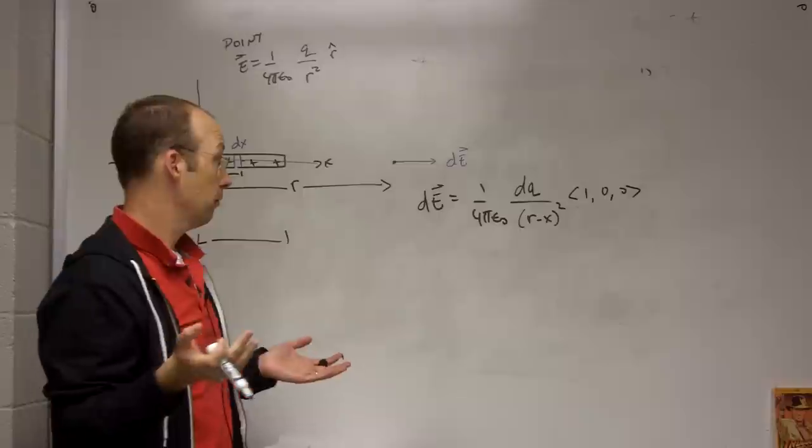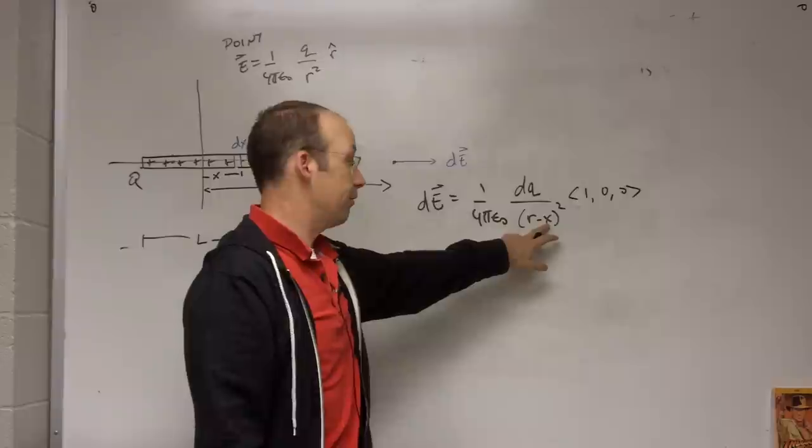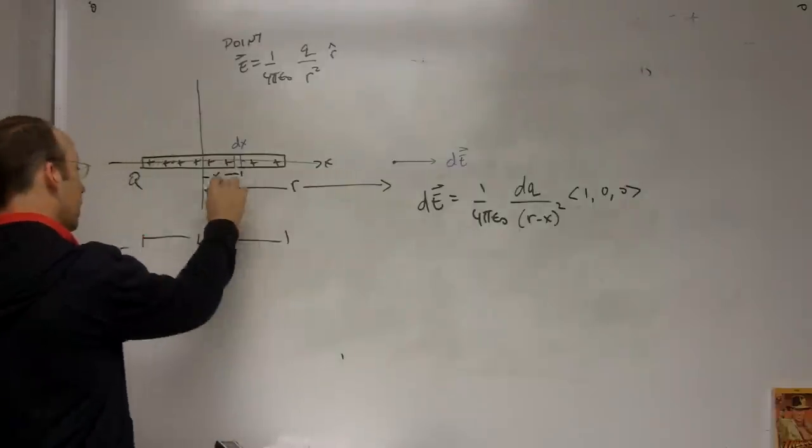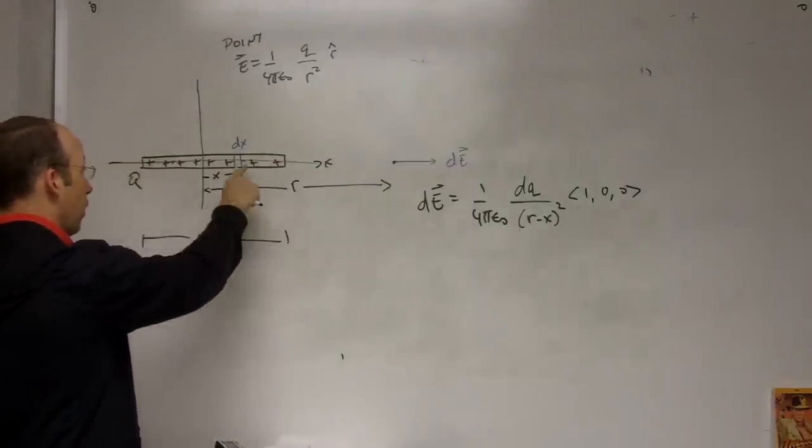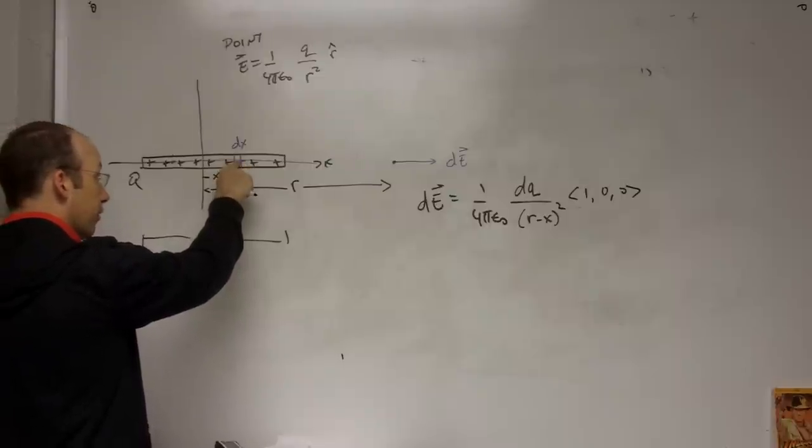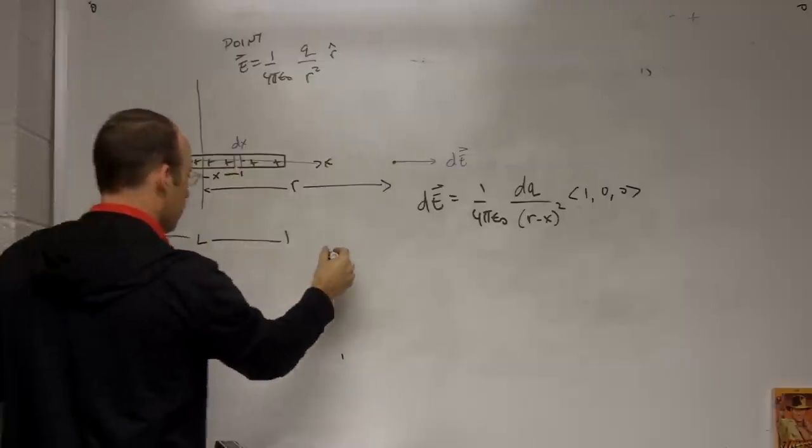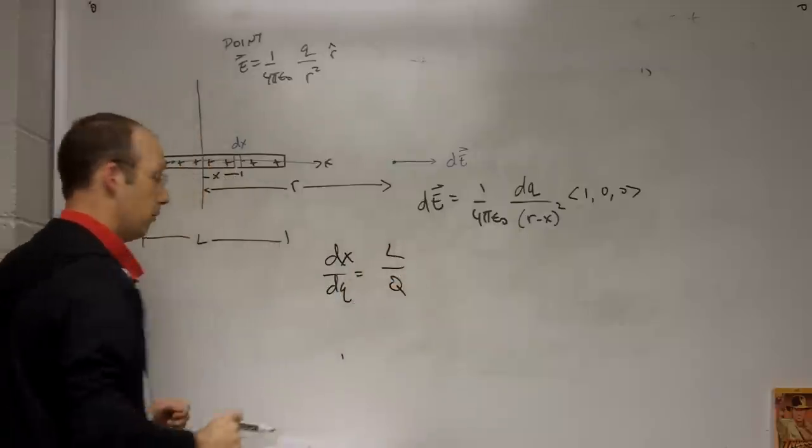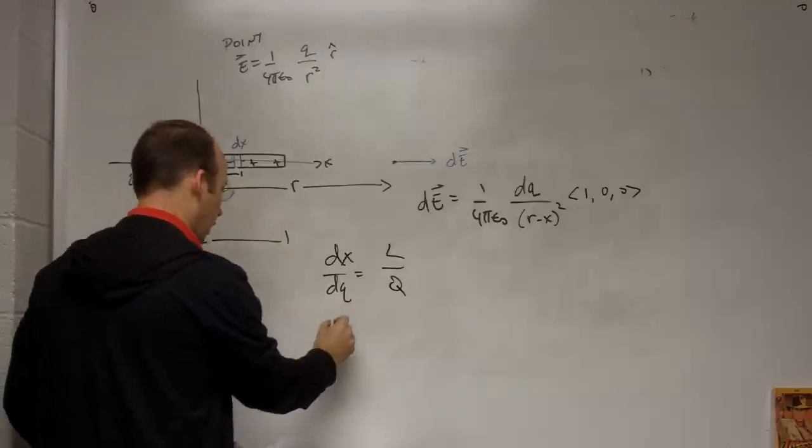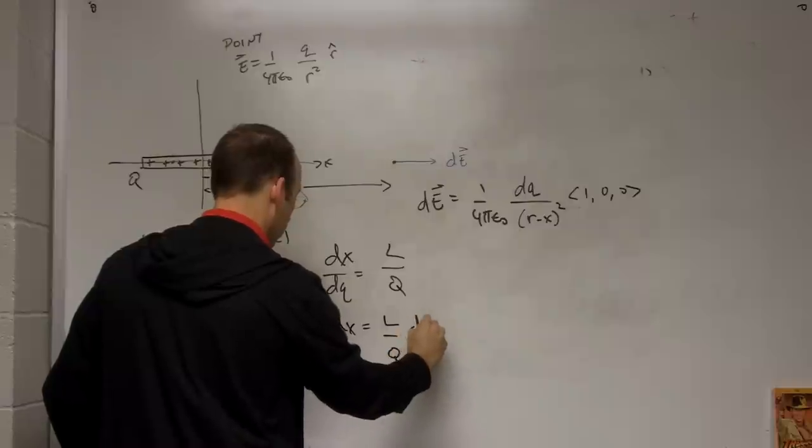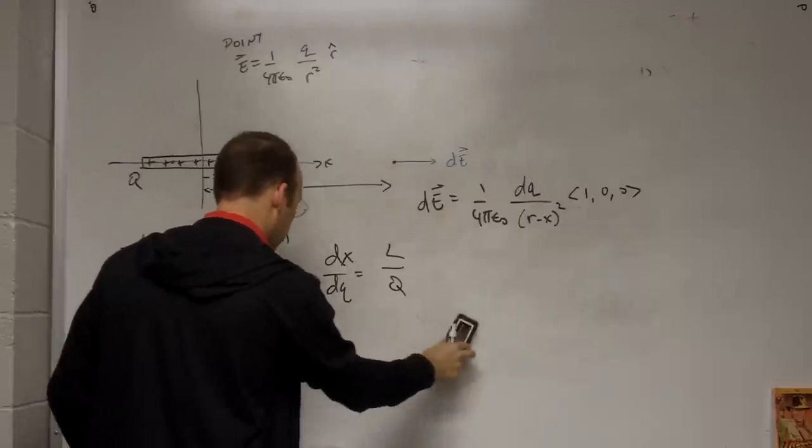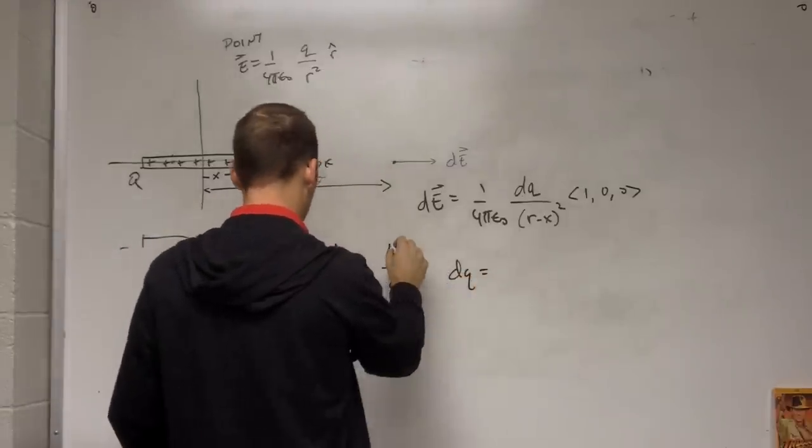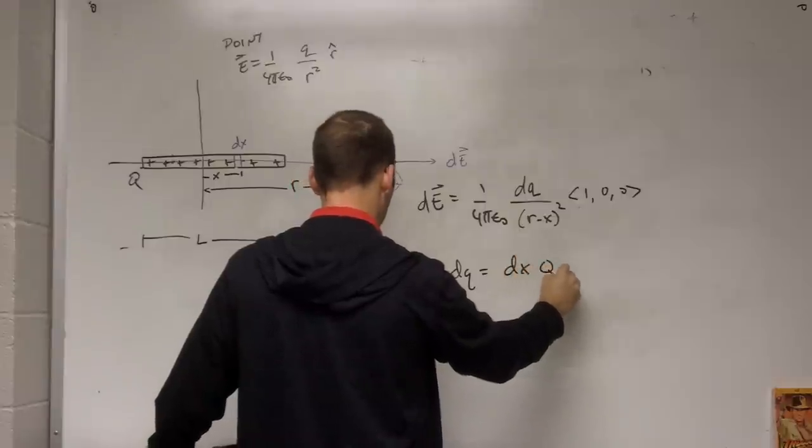Now, I can't integrate, though. I can't integrate because here X changes. That's a variable that's changing, but my integration variable would be DQ. That's not good. Okay, so what I can do is I can say, if the charge is uniformly distributed along this rod, then the charge-to-length ratio for this little piece would be the same as the big piece. So I can say DX over DQ equals L over Q. So now I can solve this for DQ. I get DQ equals DX Q over L.